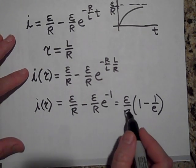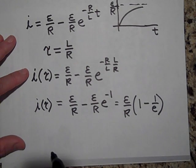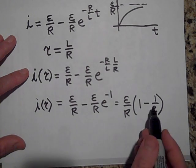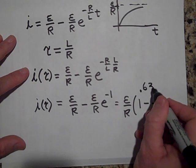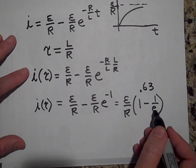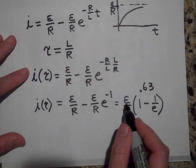So we have one minus one-third, so that's gonna be two-thirds. So after one time constant we'll have two-thirds of our final current. Now it's not really two-thirds. If you do this out, it's not point six seven, it's point six three.